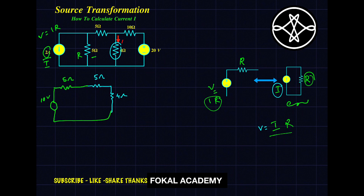Now for the polarity of the converted voltage source: the current direction is downward, so wherever the arrow points, take that as the plus side. So plus is at the top and minus is at the bottom.